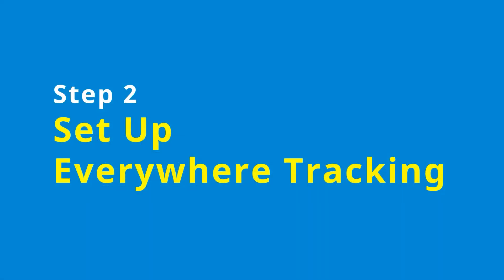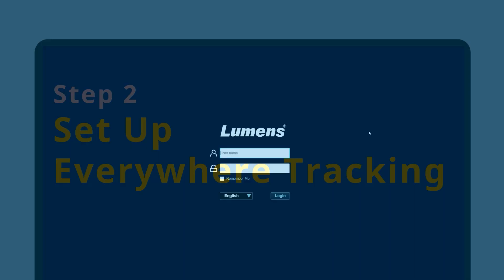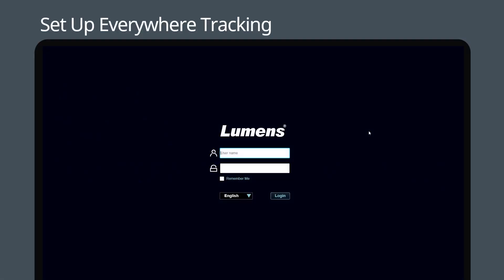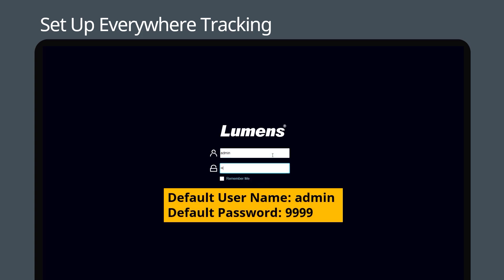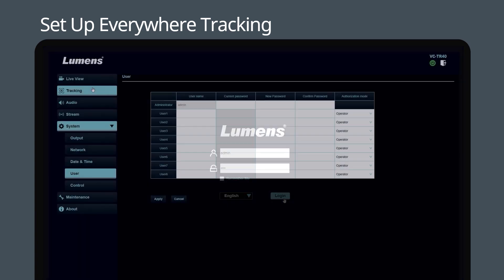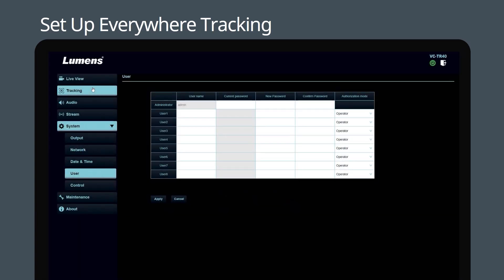Set up the everywhere tracking mode. First, find the IP address of the TR40 and log into its web page. The default account and password are admin / 9999. After accessing the camera's web page, go to the Tracking tab.